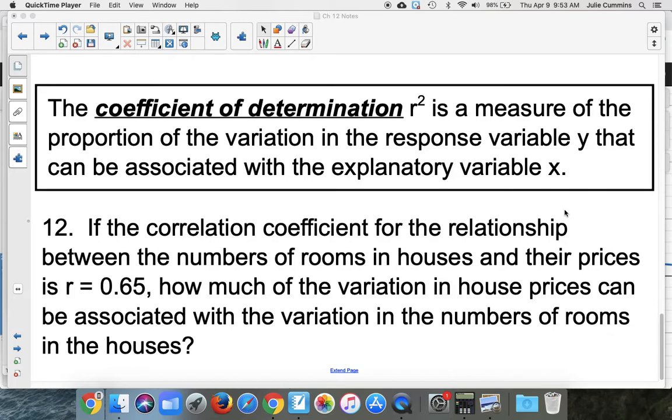It's the measure of the proportion of the variation in the response variable that can be associated with the explanatory variable. Again, I encourage you to read the section in the book about this because it does a really good job.